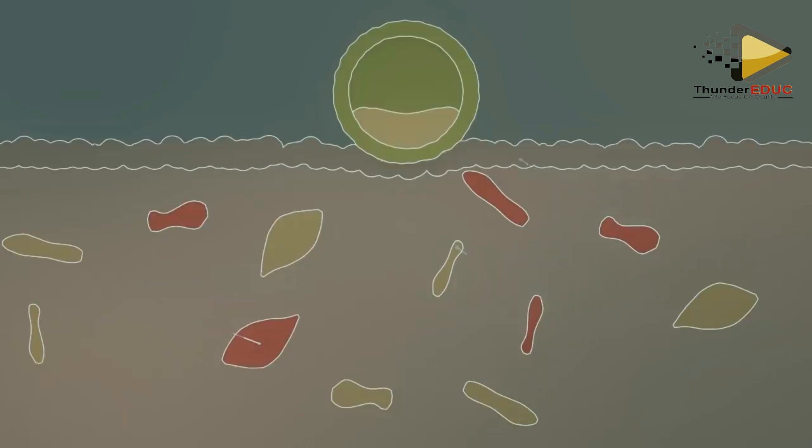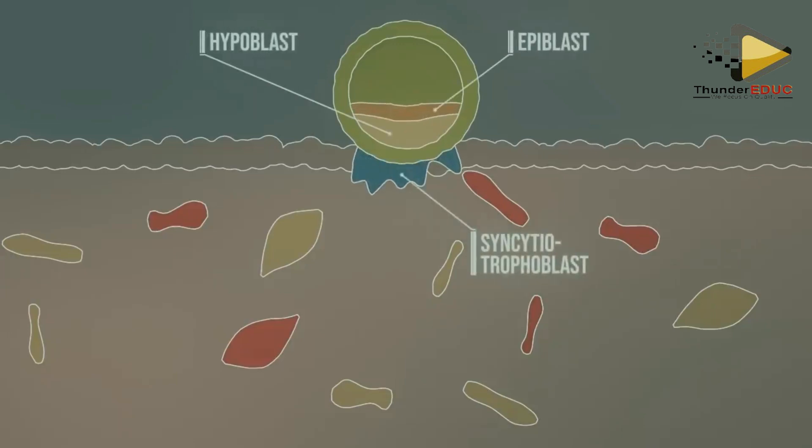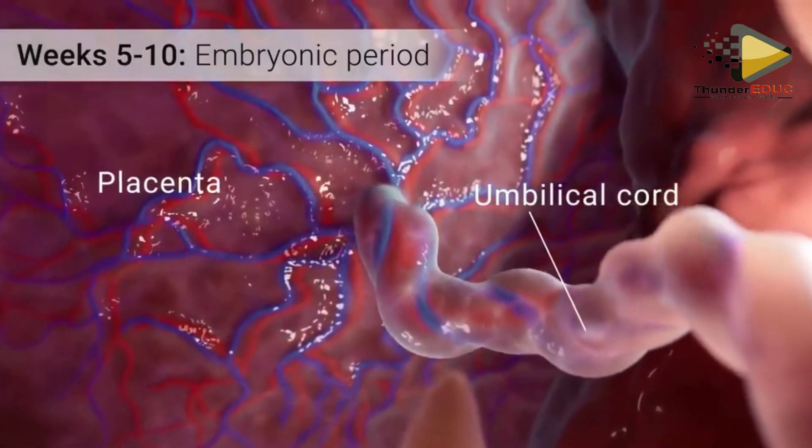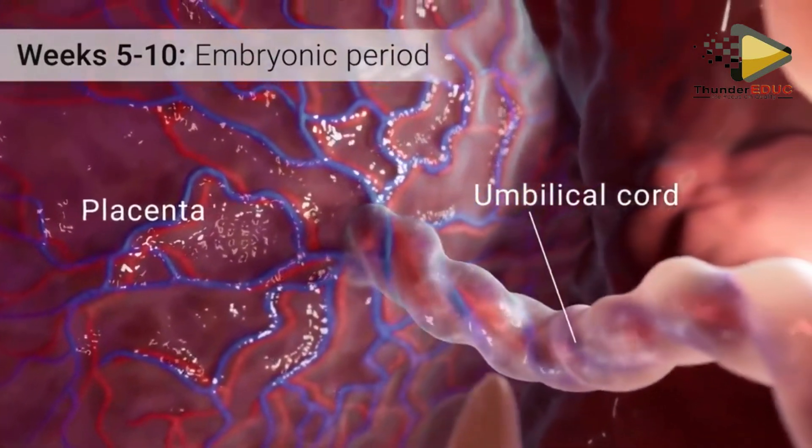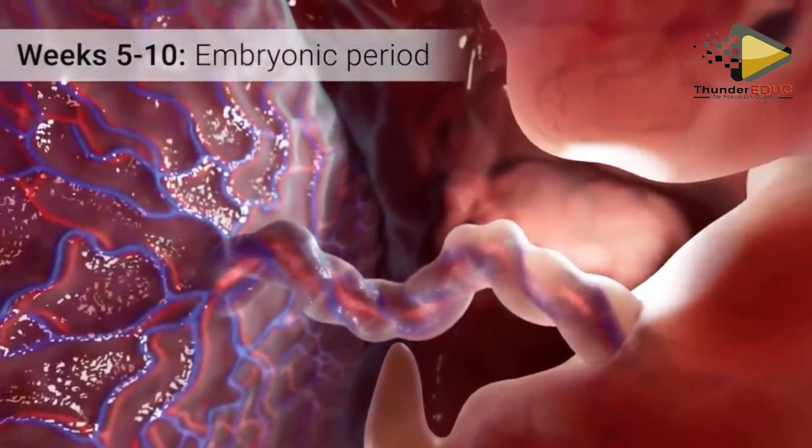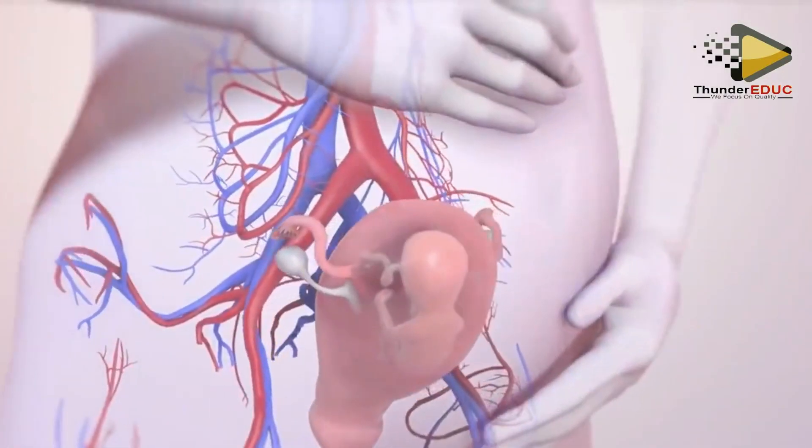Implantation occurs using the outer membrane called chorion, forming finger-like projections called chorionic villi, forming the placenta afterwards.